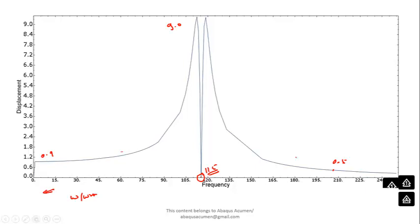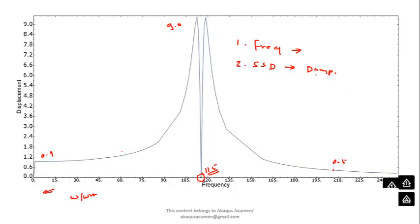To summarize today's session: First, you must run a frequency analysis to get the natural frequencies and mode shapes. Second, in steady state dynamics you must specify damping — structural damping here is 5%. If you don't apply any damping the response will go to infinity at resonance. We will demonstrate that in the next problem.